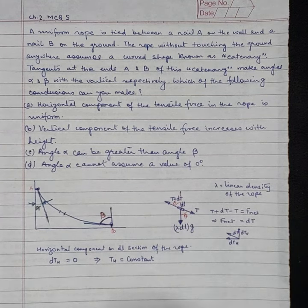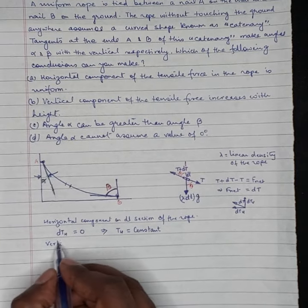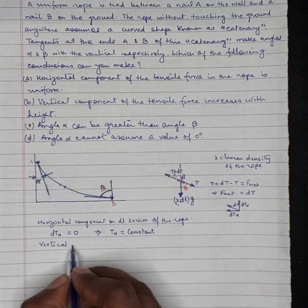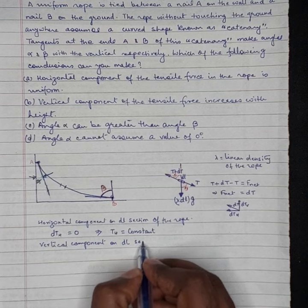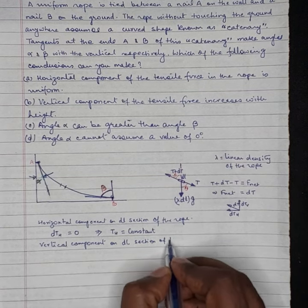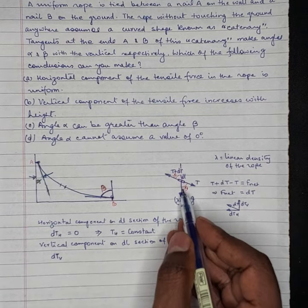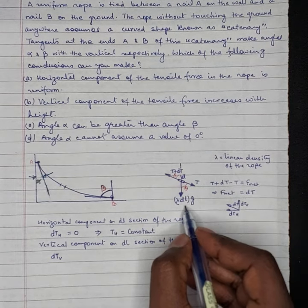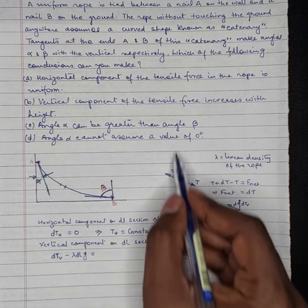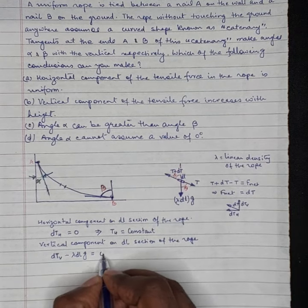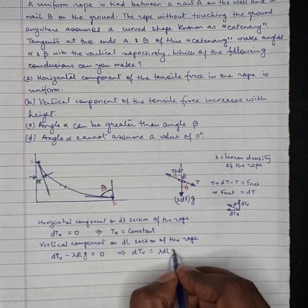Now let us go on vertical component. On the dL section of the rope, that will be dT_V. And also in the vertical direction, lambda dL G, that gravitational pull is acting on that. There is no motion, there is no acceleration in the vertical direction as well. So this will be equal to 0. So therefore, dT_V will be lambda dL into G.